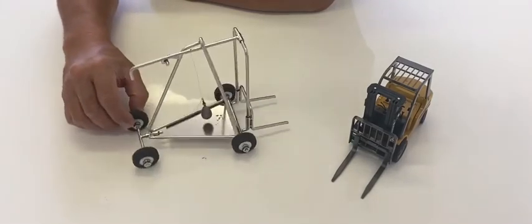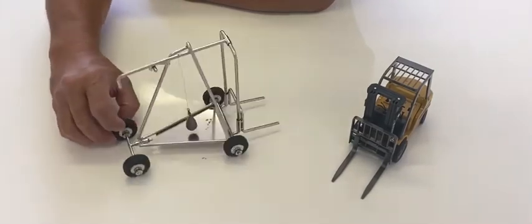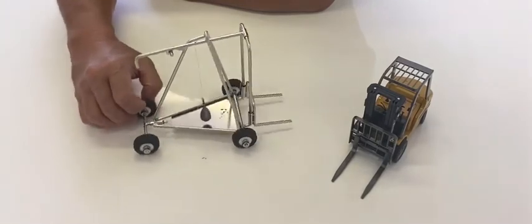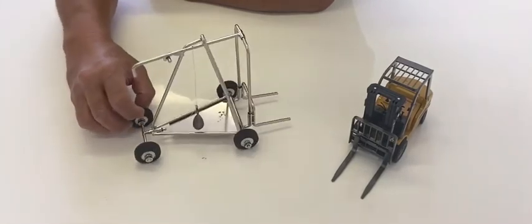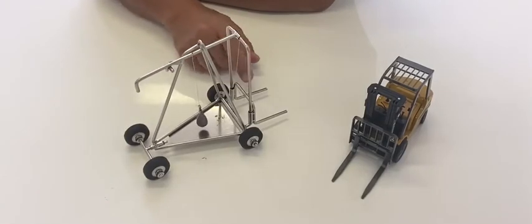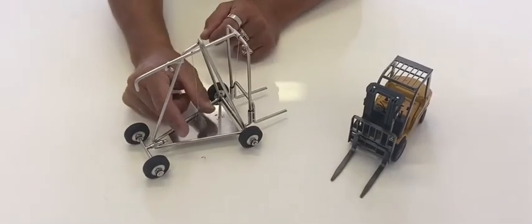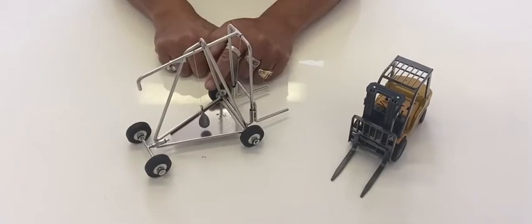When we are turning sideways, you can see the stability point is moving within this triangle to the closest of the outside. Side shift also does the same thing, and the same happens when we are going over uneven surfaces or bumps.